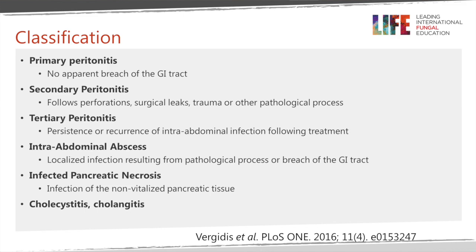Tertiary peritonitis occurs whenever there is persistent or recurrent infection despite treatment — either surgical control of the infection or antifungal treatment. Intra-abdominal abscess is a localized collection of pus and candida occurring as a result of a pathological process within the abdomen. Less common entities include infected pancreatic necrosis and cholecystitis/cholangitis with candida infection.